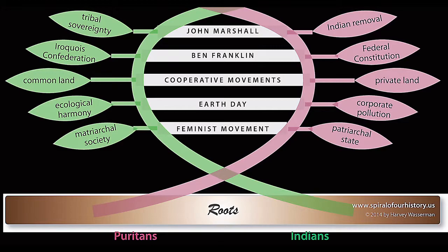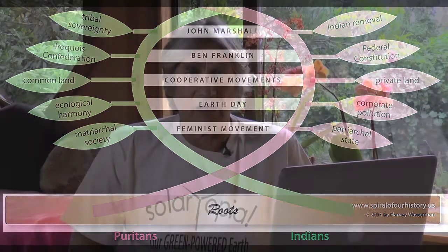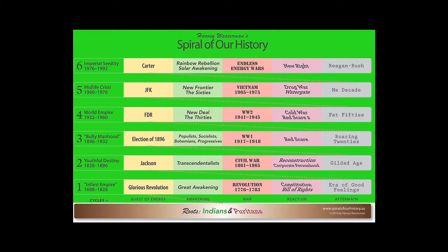This conception resulted in the birth of the United States in 1776, and with this birth we see the beginnings of six distinct cycles of United States history that form a spiral. The embryonic state actually happened in 1688 with the Glorious Revolution. It spans through six cycles, each with a burst of energy, a springtime awakening, a summer of war, a fall of reaction, and a wintertime of aftermath where people are concerned primarily about materialism and don't want anything to do with political change.